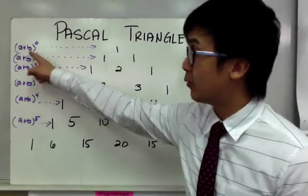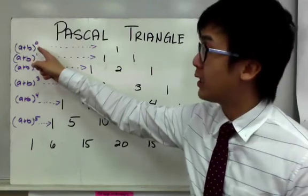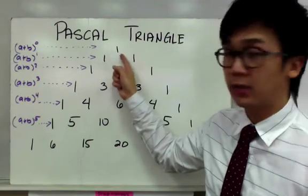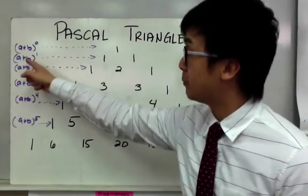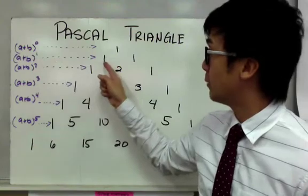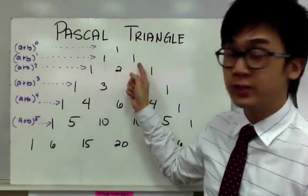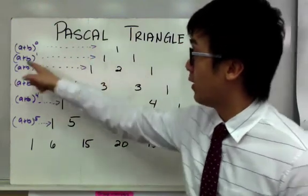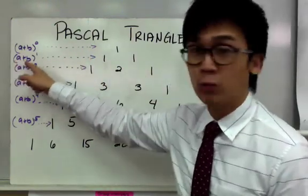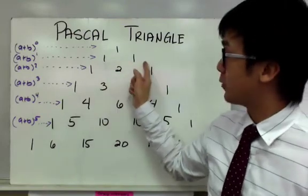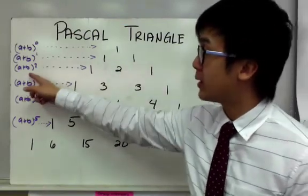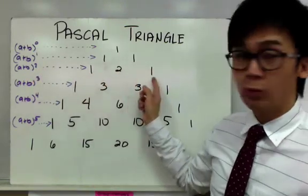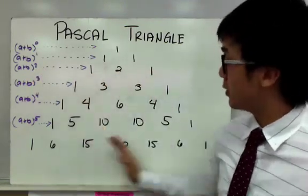If we have a plus b raised to the 0 power, we know that any number raised to 0 is equal to 1, so that's why we have the topmost level as 1. If we have a plus b raised to the first power, the second level will be 1 and 1 — those are the coefficients for your binomial expansion: 1a and 1b. And if we have a plus b raised to the second power, in Pascal's Triangle we have 1, 2, 1.